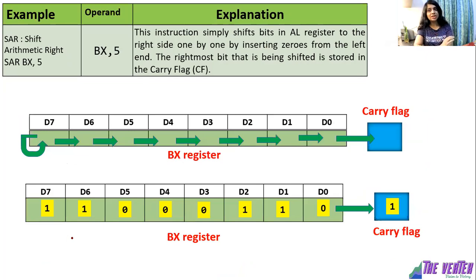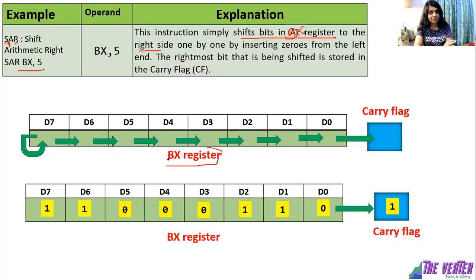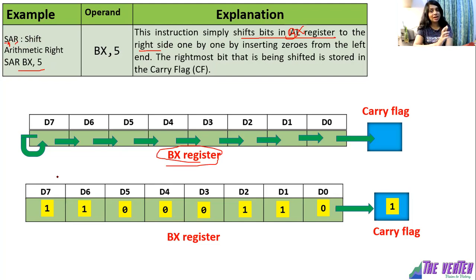The next instruction is SAR — Shift Arithmetic Right. S stands for shift, R for right, and this is arithmetic right shift. This instruction also shifts bits in the register to the right side. Here the operand is BX, so it will shift the BX register contents towards right by one bit position. The difference between SHR and SAR: in SHR we enter zero at the D7 position, but in SAR, D7 remains as it is.